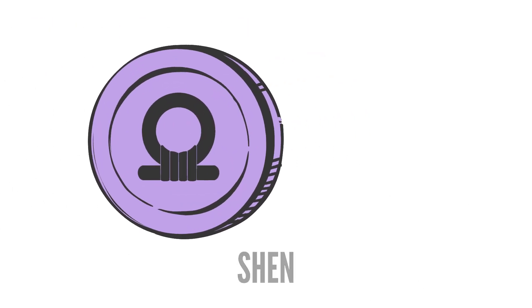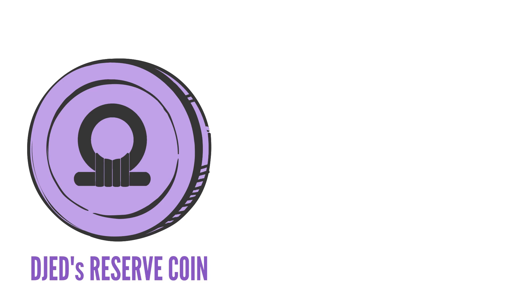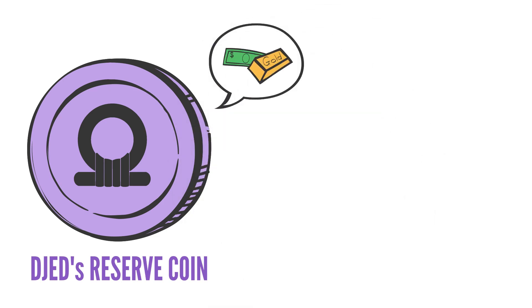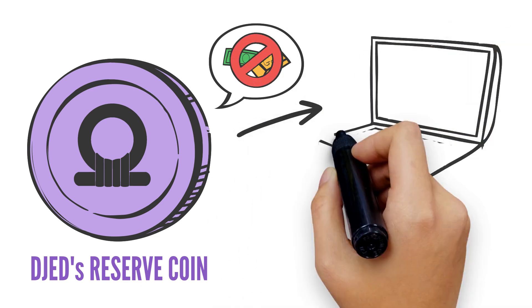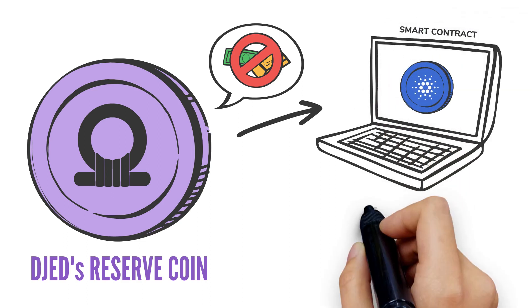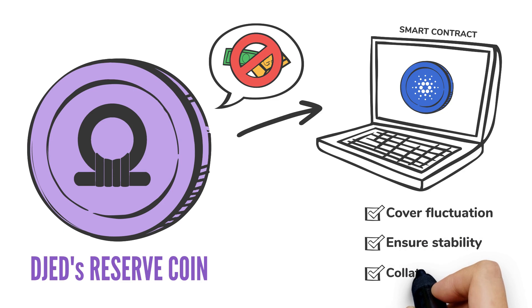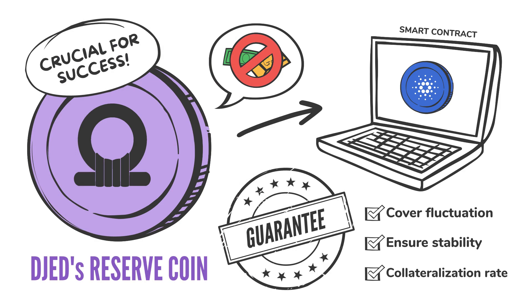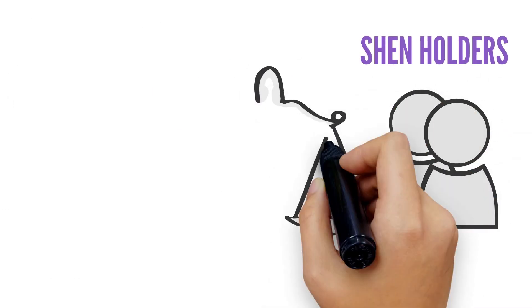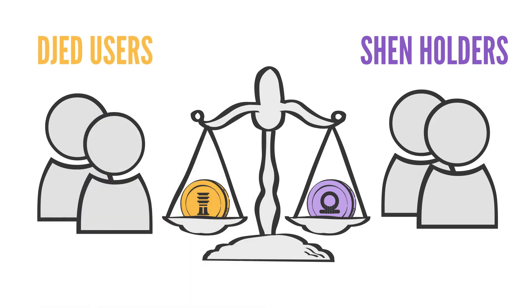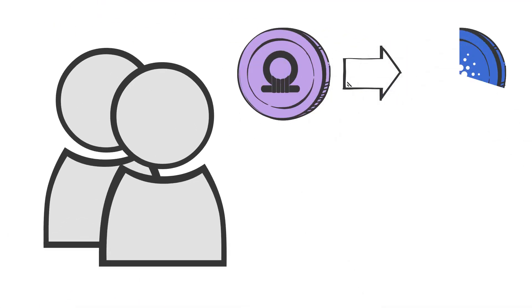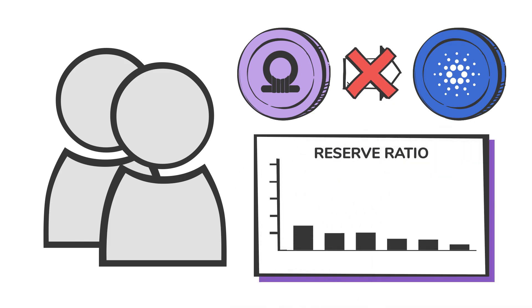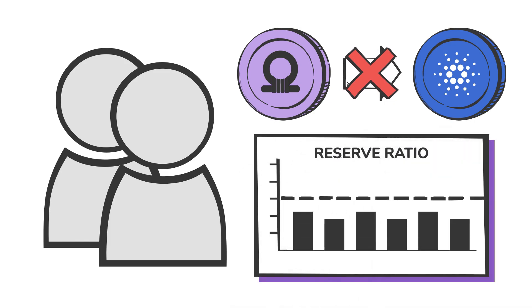That's where SHEN comes into the picture. SHEN is the reserve coin in charge of providing extra reserves for the pool. Unlike the JED stablecoin, SHEN is not pegged to a specific asset and its price can fluctuate. It is basically funding the smart contract with enough ADA to cover its fluctuation, ensure price stability, and guarantee the collateralization rate. Having a reserve coin is crucial for the success of the stablecoin. By minting SHEN, the holders provide a service of stability to JED users.